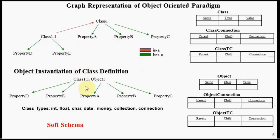This whole paradigm with these six relational database tables is something known as a soft schema.